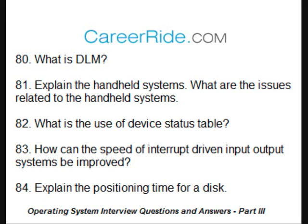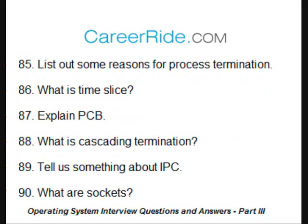Explain the positioning time for a disk. It is also called random access time — the time used by a disk to perform operations. It consists of the time to move the disk arm to the desired cylinder, called seek time, and the time required for the desired sector to rotate to the disk head, called rotational latency. Seek time and rotational latency are always measured in milliseconds.